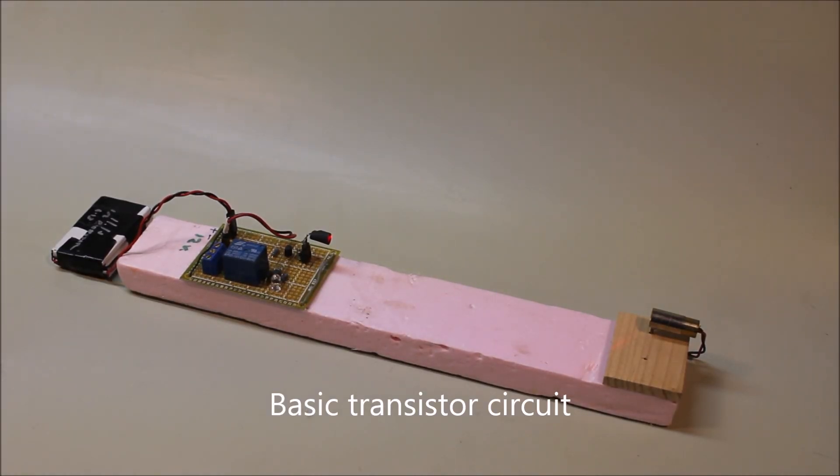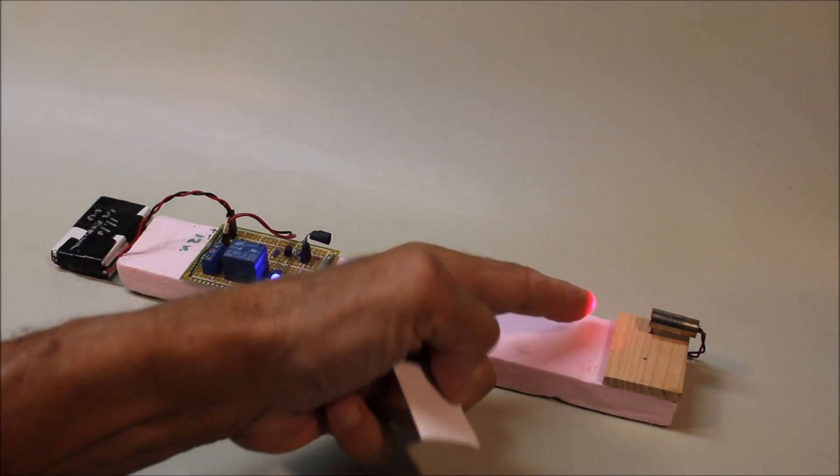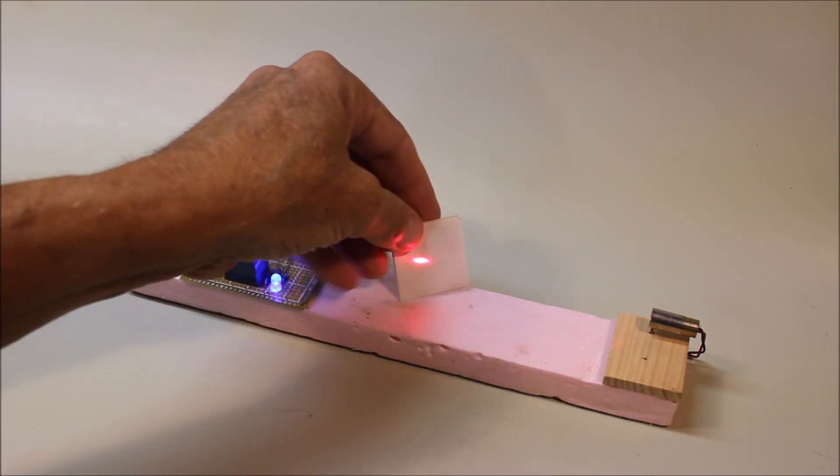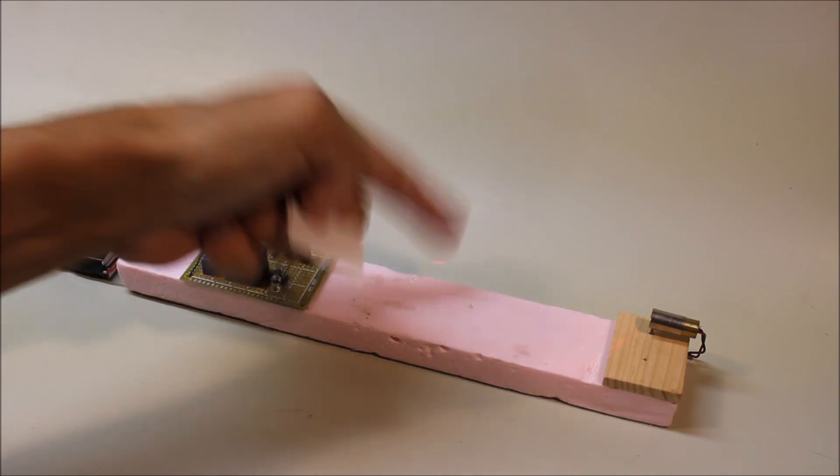This arrangement shows the simplest way that you can use the laser detector to detect trains or other objects. The laser is over here and you can see it quite clearly on this piece of paper or on my finger as I block it.